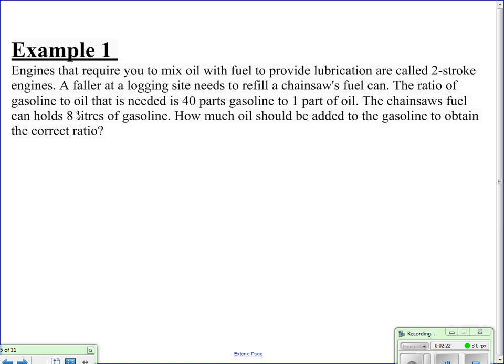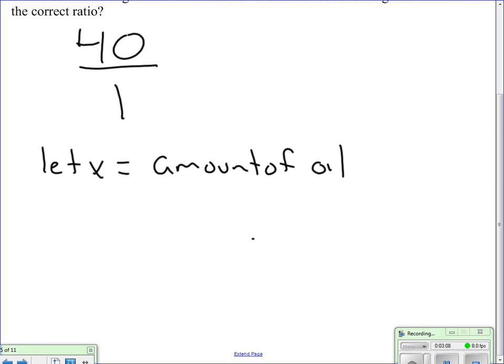So, engines that require you to mix oil with fuel to provide lubrication are called two-stroke engines. A faller at a logging site needs to refill a chainsaw. The ratio of gasoline to oil that's needed is 40 parts gasoline to one part oil. The chainsaw can hold 8 liters of gasoline. So, how much oil should be added to the gasoline to obtain the correct ratio? So, we can write the ratio of liters of gasoline to oil as 40 to 1. Remember, it's very useful to use fractions first. So, let's let x equal the amount of oil needed.